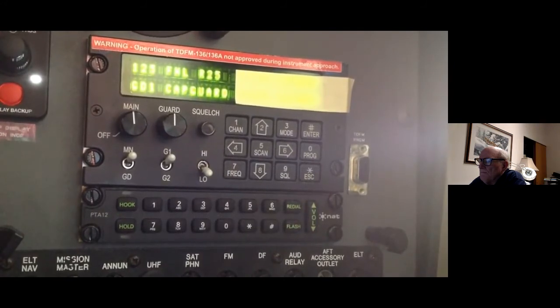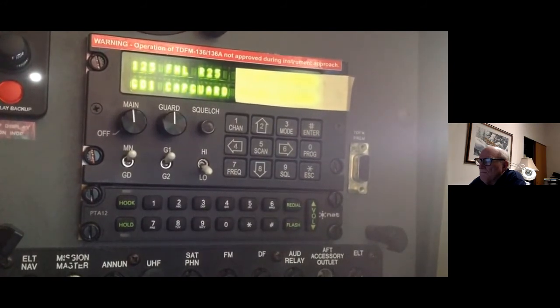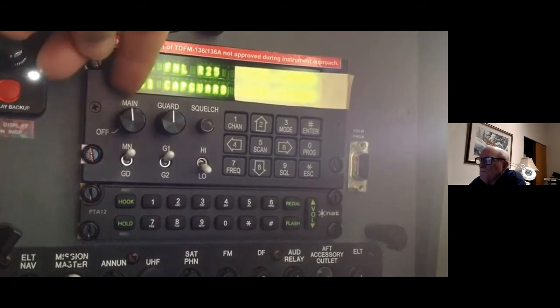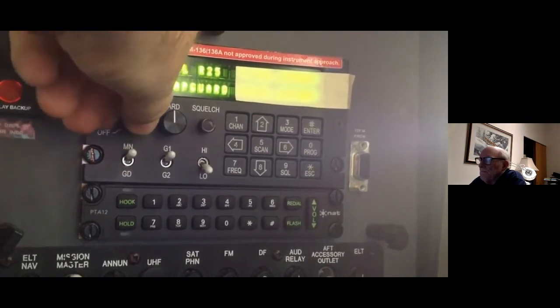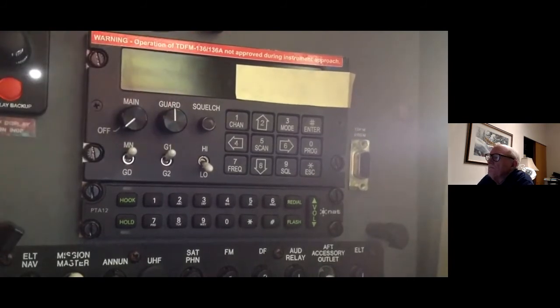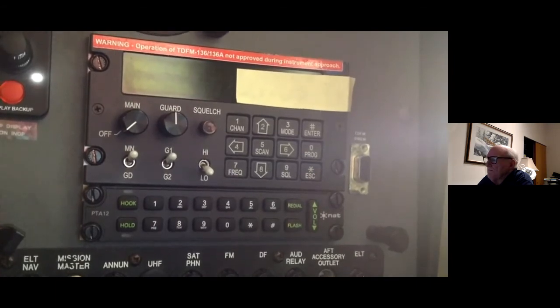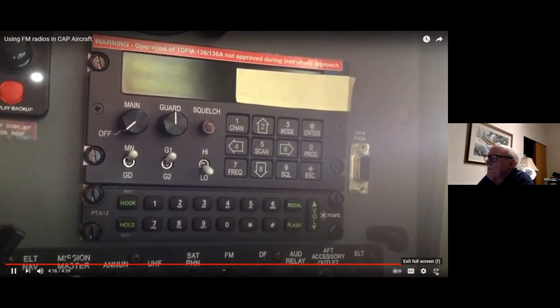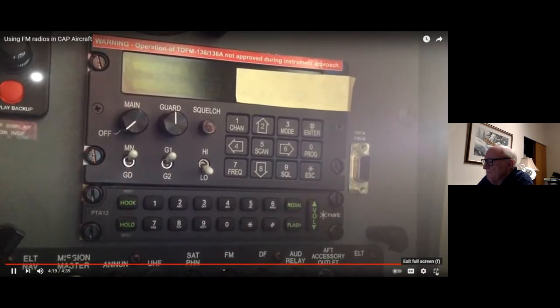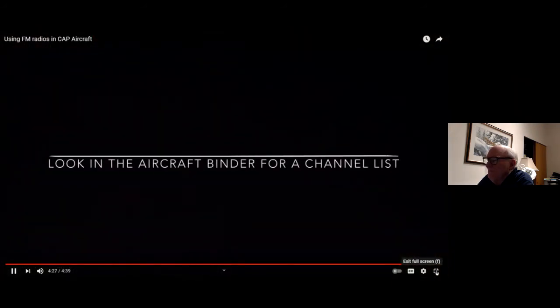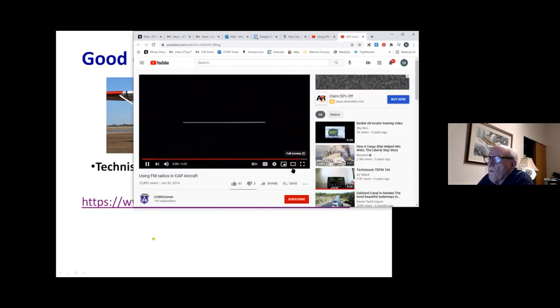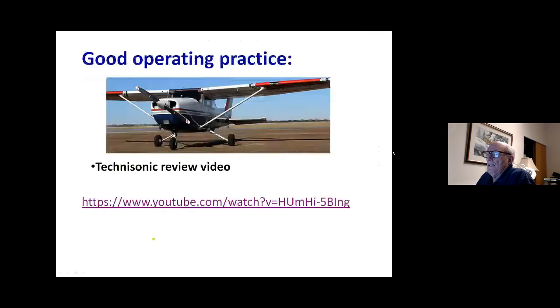When you're done using the radio, you should turn it off. That's done the same way you turned it on. Same switch. The main volume control. Simply rotate that to the left until it clicks to the off position. And then the radio is turned off. That concludes the training on all the basic operational features of the TDFM-136 radio, the CAP VHF FM radio installed in most CAP aircraft. Blue Mesa 4-2 out.